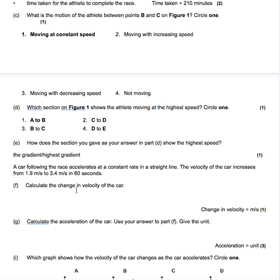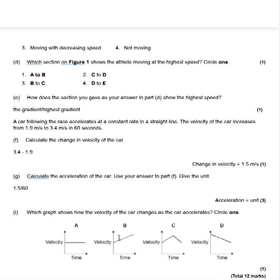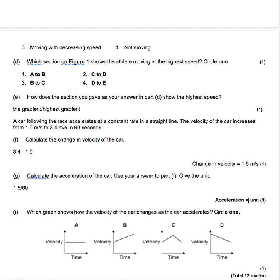The car following the race accelerates at a constant rate in a straight line. The velocity of the car increases from 1.9 ms to 3.4 ms in 60 seconds. What's the change in velocity? Well, the change in velocity will be 3.4 minus 1.9, which is 1.5. Calculate the acceleration of the car. The acceleration is the change in velocity divided by the time. So it is 1.5 divided by 60, which is 0.025. So there we have two of our marks.